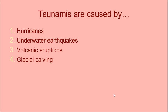Tsunamis — what are those caused by? They're caused by underwater earthquakes. Tsunamis are a function of earthquakes: the wave that passes through the crust is what causes the earth to shake, because the pressure is relieved in the earthquake. When that happens underwater, that wave goes through the water and you have a tsunami.